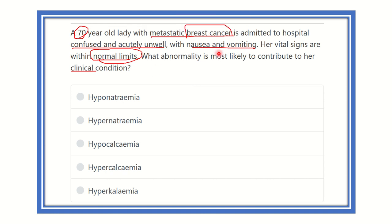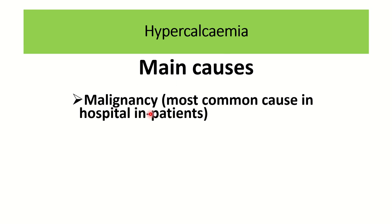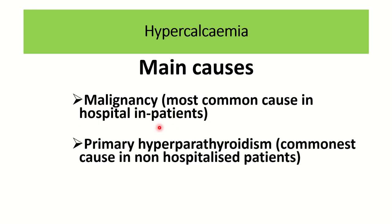Let's see some information regarding the question. Here you can see the causes of hypercalcemia. The main cause in hospital-admitted patients is malignancy — malignancy is the most common cause of hypercalcemia in hospitalized patients. The explanation will be delivered later. Primary hyperparathyroidism is a common cause in non-hospitalized patients. These two points are very important: in hospital admissions, hypercalcemia is due to metastatic cancer or malignancy.